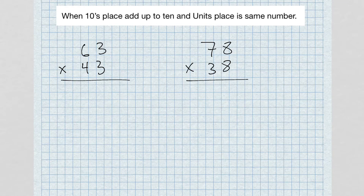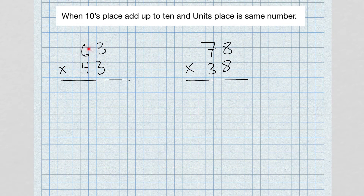All right, quick trick: when the tens digits add up to 10 and the units digit is the same number. So the tens place adds up to 10 — you see 6 and 4 add up to 10 — and the units place is the same number, in this case 3. Same thing over here: 7 and 3 add up to 10, and the units place is the same number.